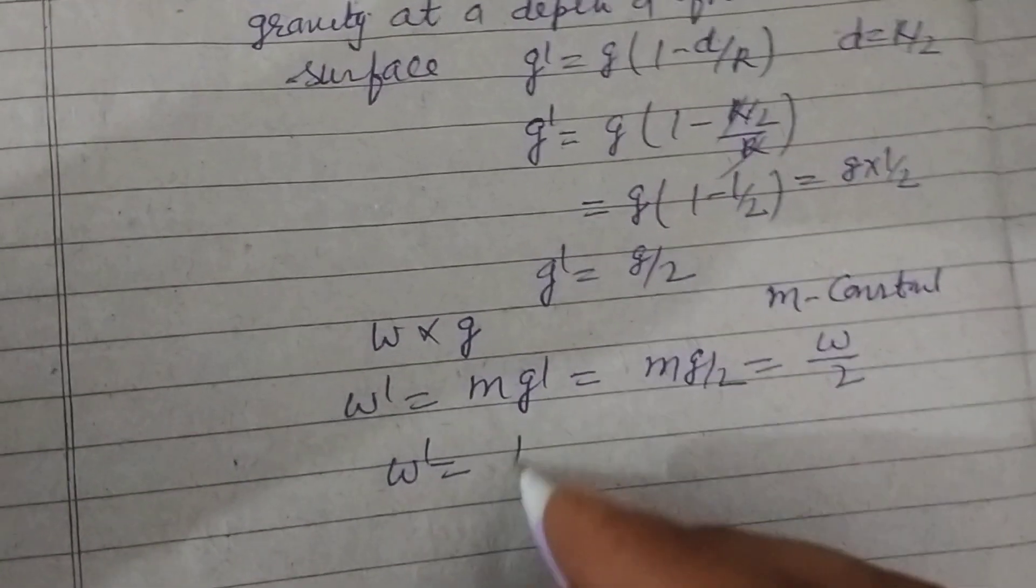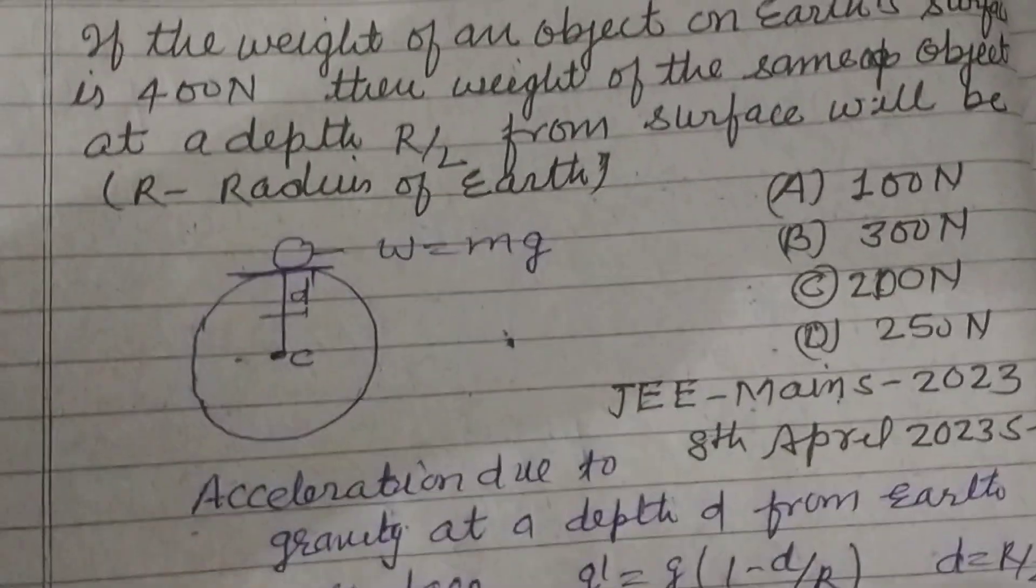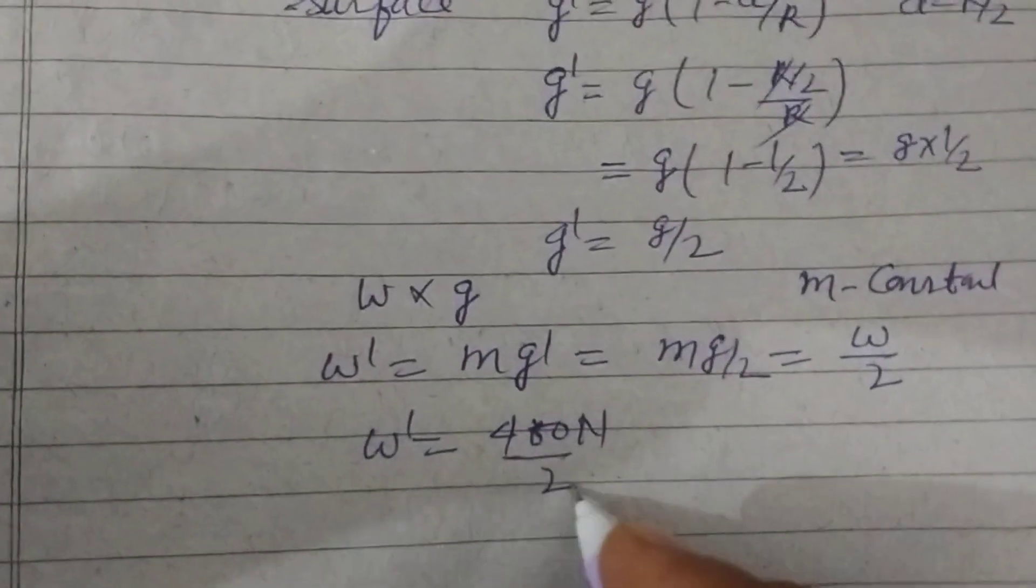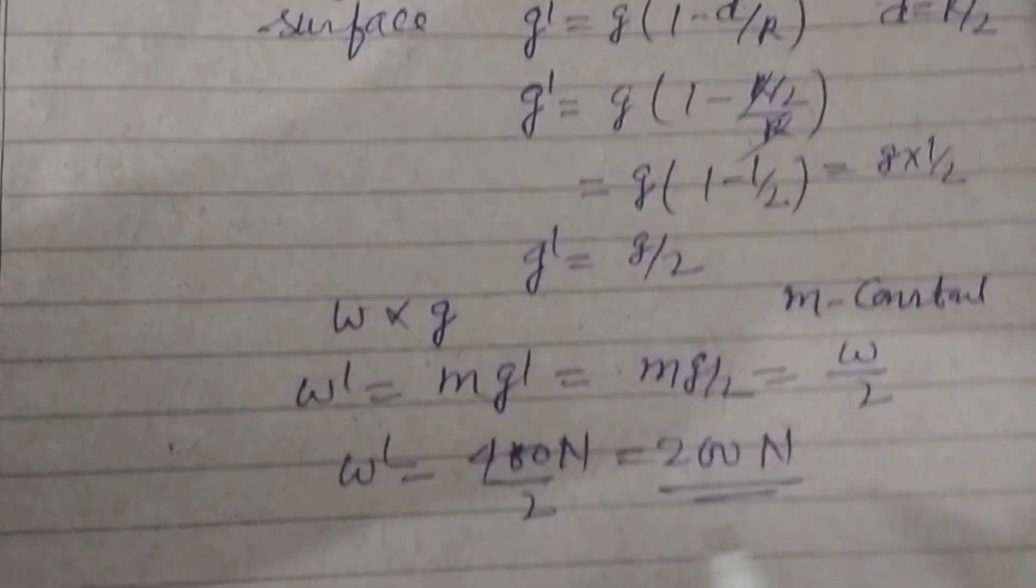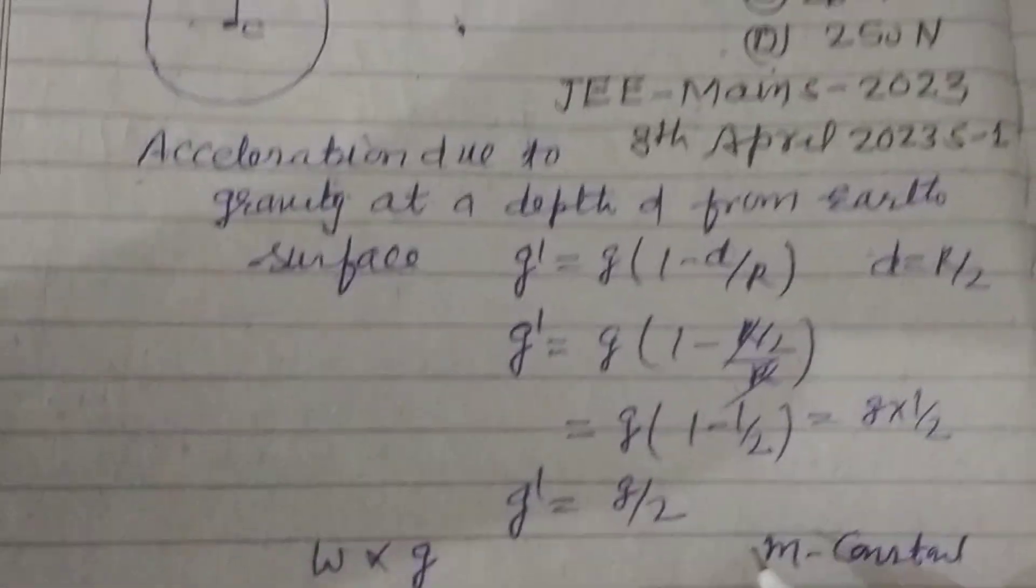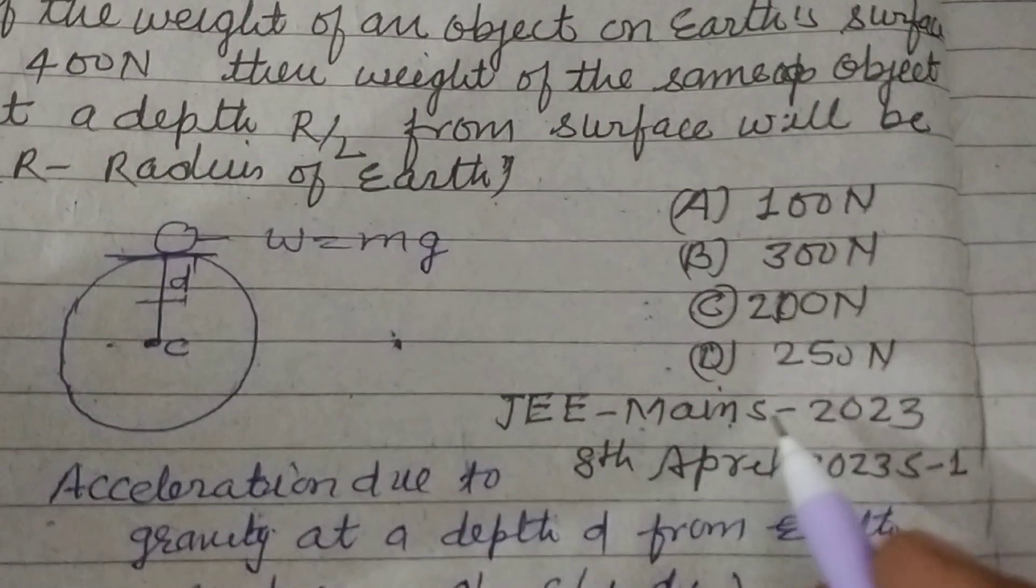So w dash equal to, and w is given how much, 400 Newton, so 400 Newton by 2, this is 200 Newton. So weight of the body at a depth r by 2 is 200 Newton.